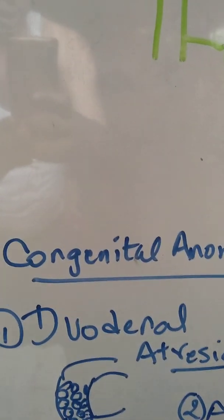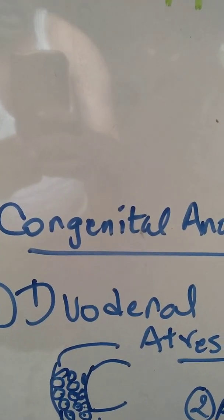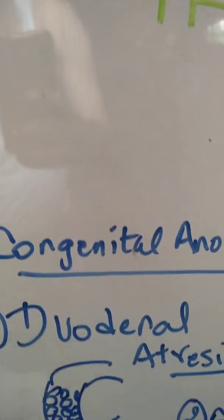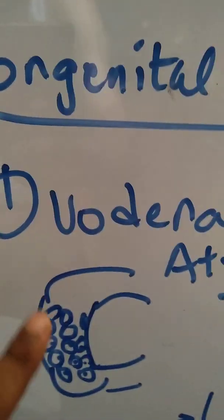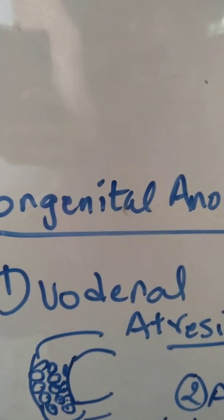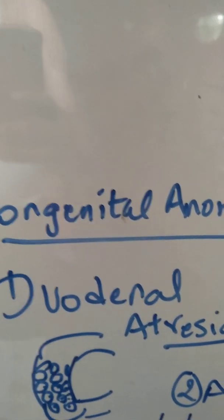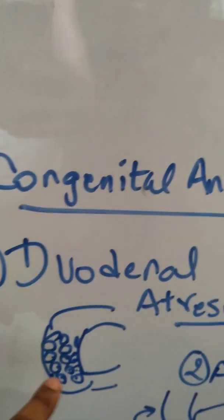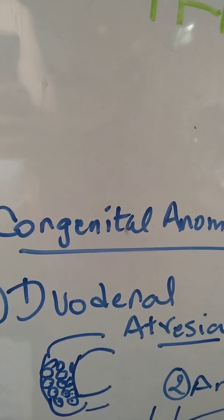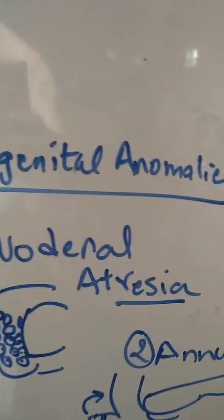Coming to the congenital anomalies of the duodenum: the first condition is duodenal atresia. The cells proliferate to obliterate the lumen, but if the central portion cells fail to die and the lumen fails to re-canalize, the duodenum remains blocked. The child will have failure to feed, projectile vomiting, and failure to gain weight. An operation must be done immediately to clear the atresia, or a bypass is created between the lower end of the stomach and the jejunum.